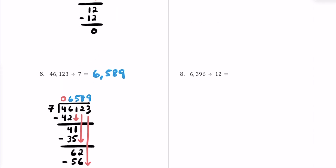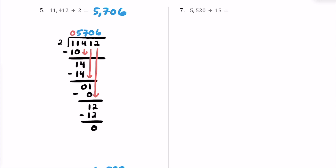Here's number 7. We have 5,520 divided by 15. This is the first problem where we have a double-digit divisor, so we may not be able to use our multiplication facts as easily. Hopefully 15 is not too bad, but we probably don't know our 15 times tables as well, so I'll write some work on the side.